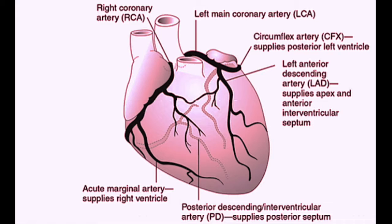The other branch of the left main coronary artery is the left circumflex artery. The circumflex, or the circ, supplies the lateral and the posterior part of the left ventricle. The left circumflex artery gives off branches called obtuse marginal branches, which are not shown here. These obtuse marginal branches supply the lateral wall of the left ventricle.